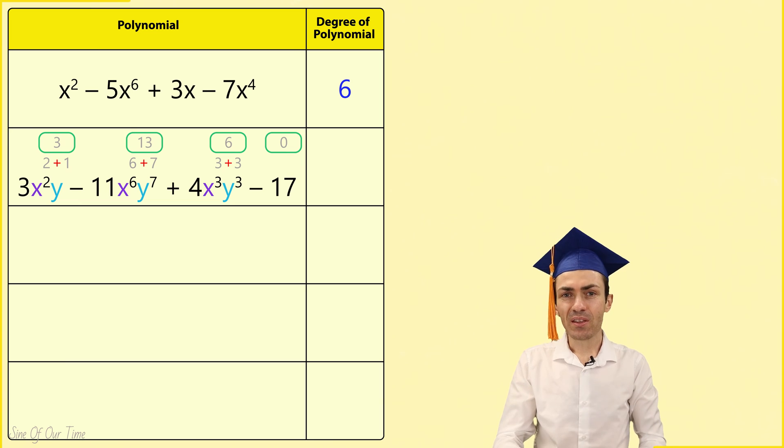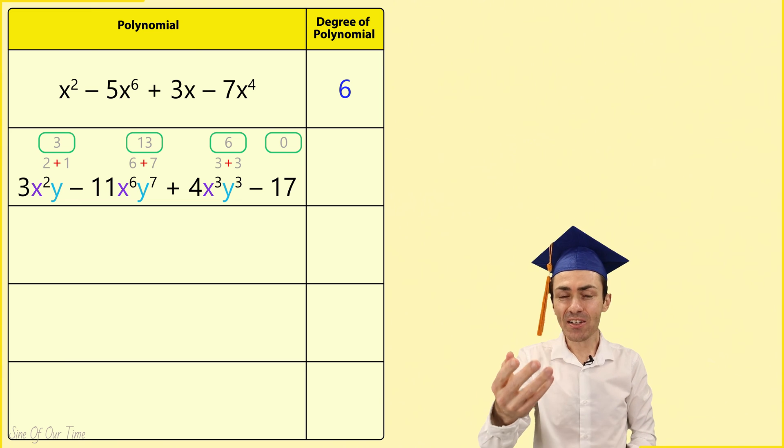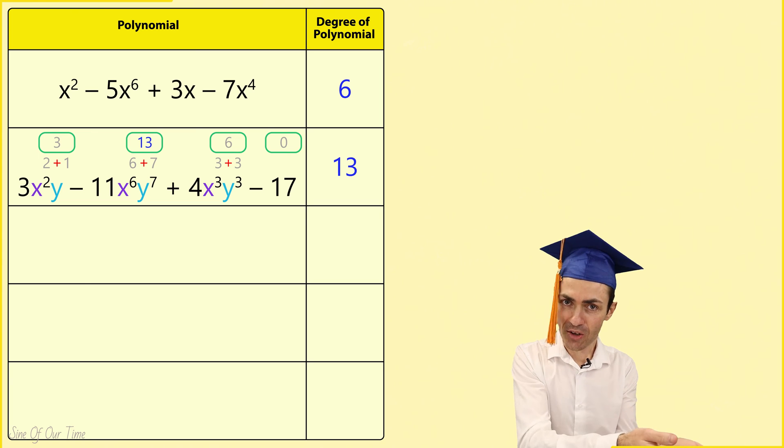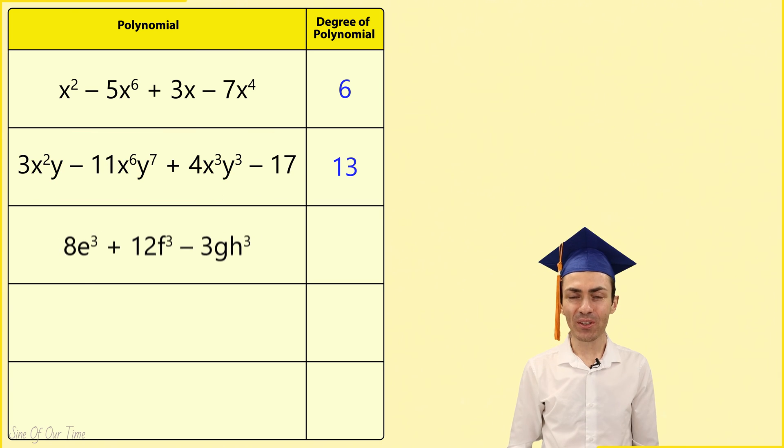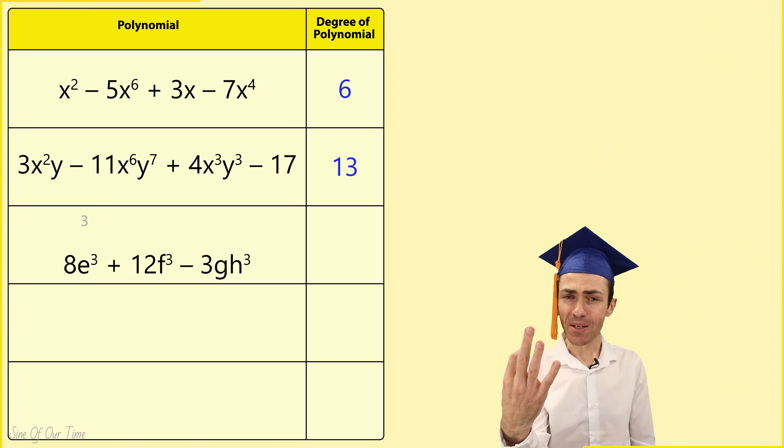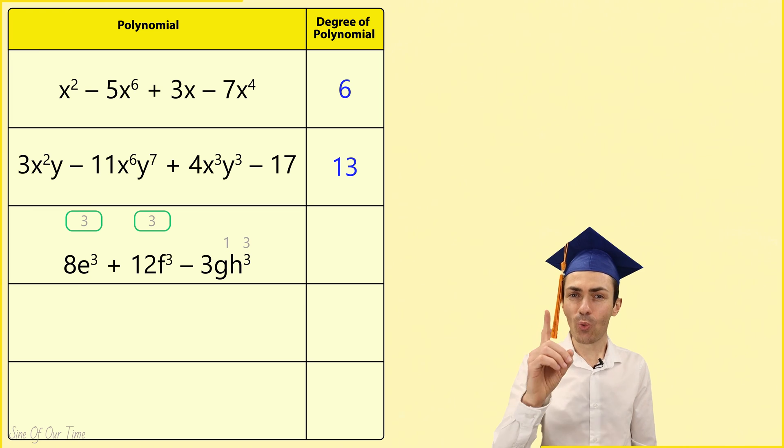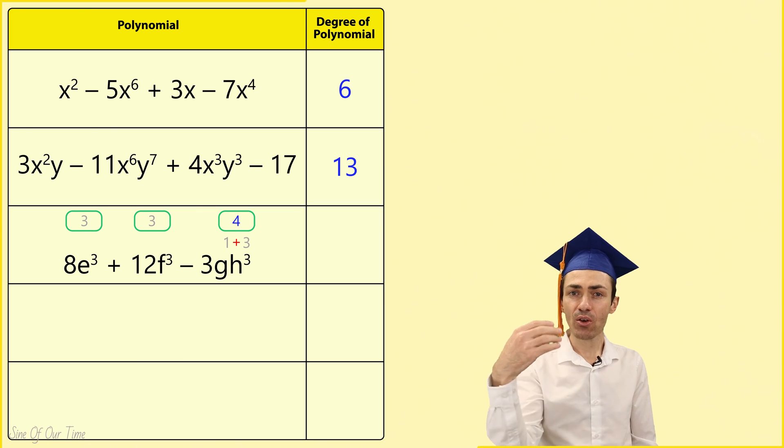So in this polynomial, the second term has the highest degree of 13, and that is going to be the degree of this polynomial. In this example, the degree of term 1 is 3 and the degree of term 2 is also 3. But the degree of term 3 is 1 plus 3 which gives us 4. Since this term has the highest degree, the degree of the polynomial is 4.